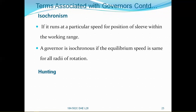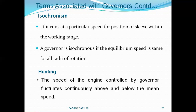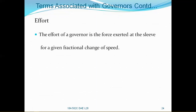Hunting: the speed of the engine controlled by the governor fluctuates continuously above and below the mean speed. That is called hunting. The effort of the governor is the force exerted at the sleeve for a given fractional change of speed. Whatever the amount of force is exerted due to this fractional change of speed, that is called effort.